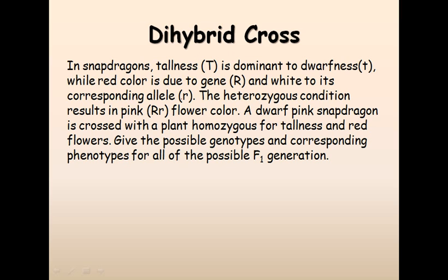Now let us talk about the dihybrid cross to understand independent assortment. In snapdragons, tallness is represented by capital T, which is dominant, and dwarfness by small t, which is recessive. Red color is due to capital R, which is dominant, and white color is due to small r, which is recessive. The heterozygous condition results in pink flowers.